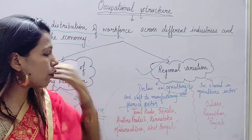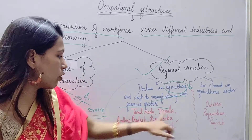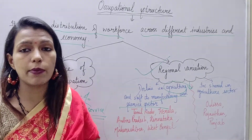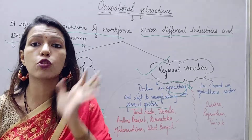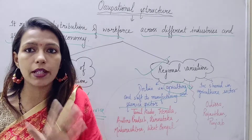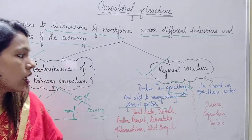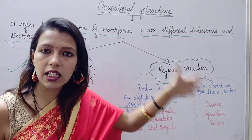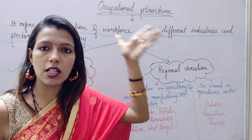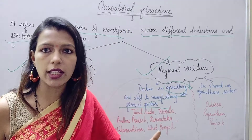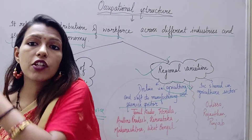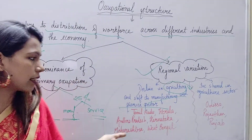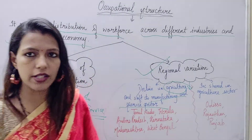In those states — Tamil Nadu, Kerala, Andhra Pradesh, Karnataka, Maharashtra, and West Bengal — learn all the names, as you have to write them in your answer sheet. These are the states where people reduced their participation in the agriculture sector and shifted to the manufacturing sector and service sector.